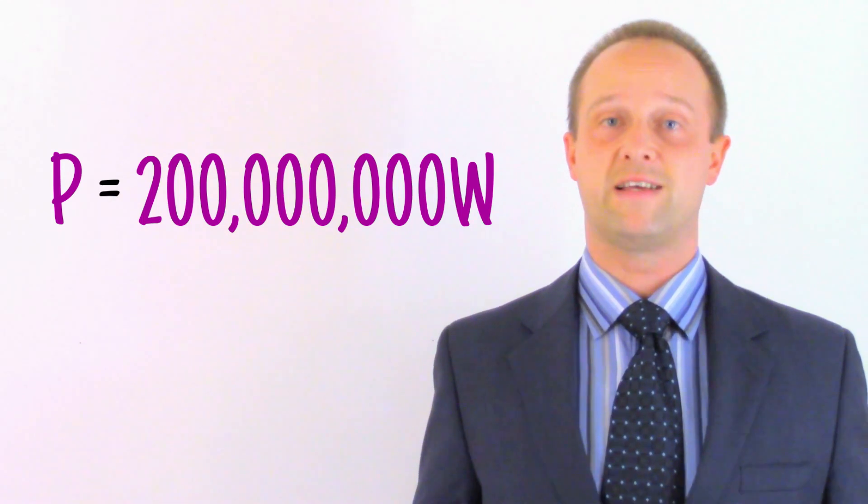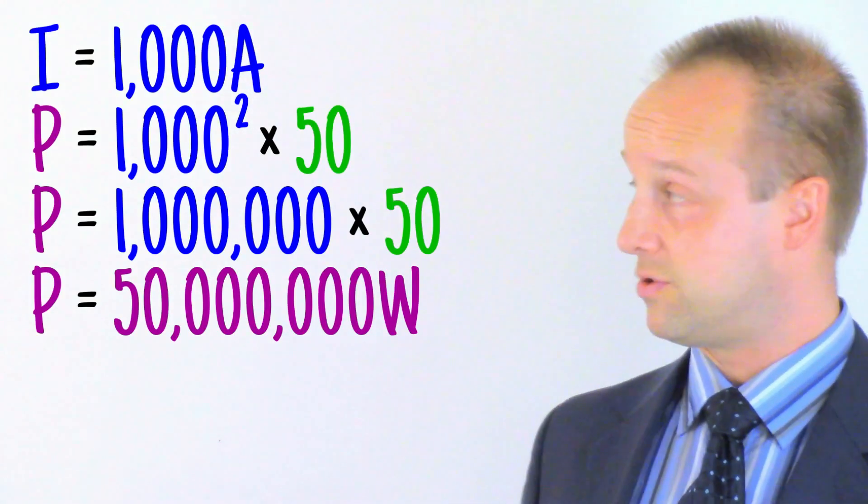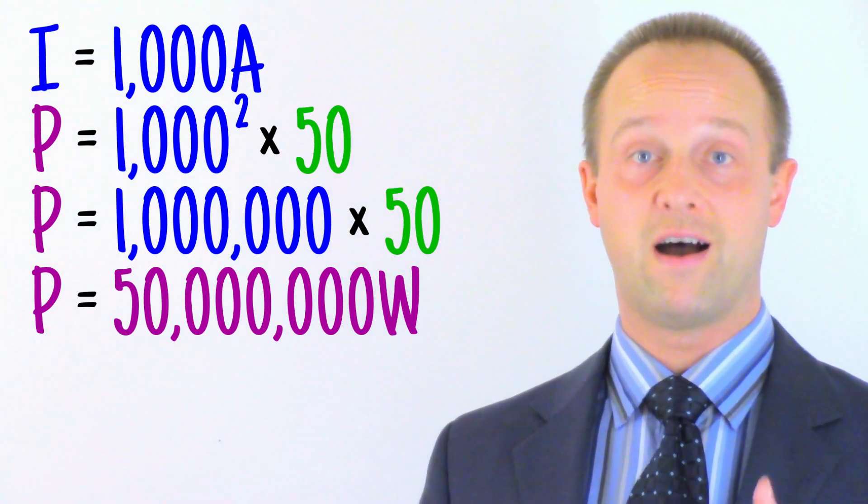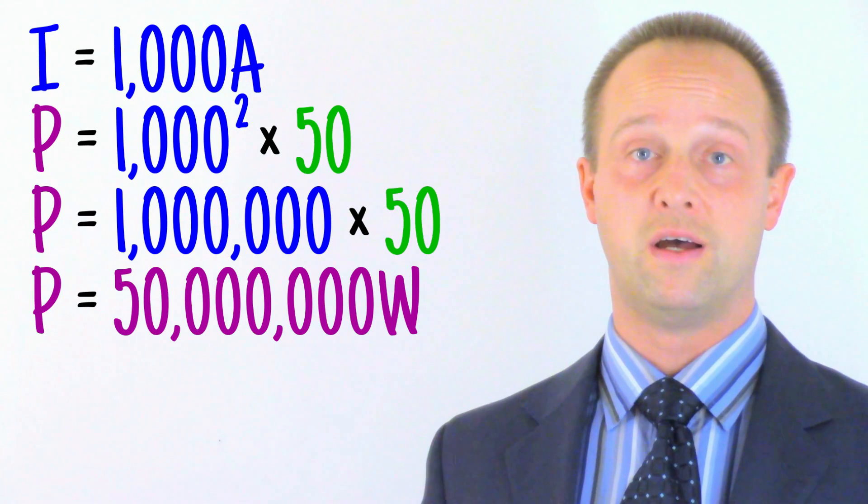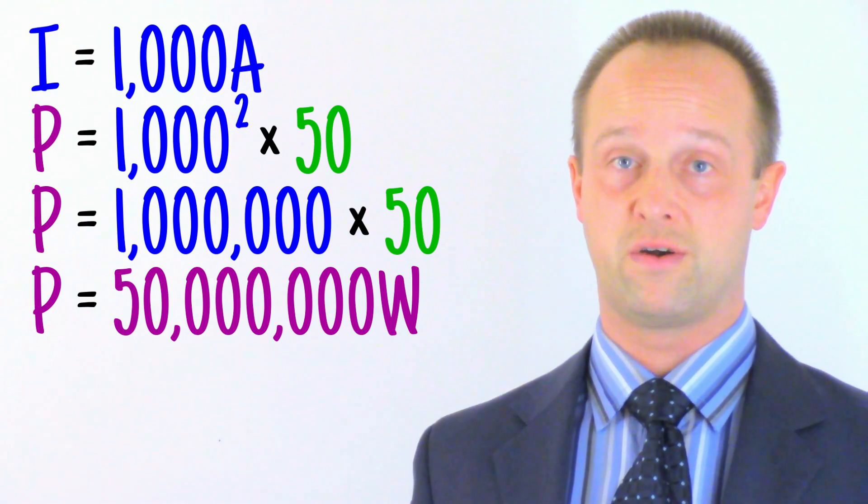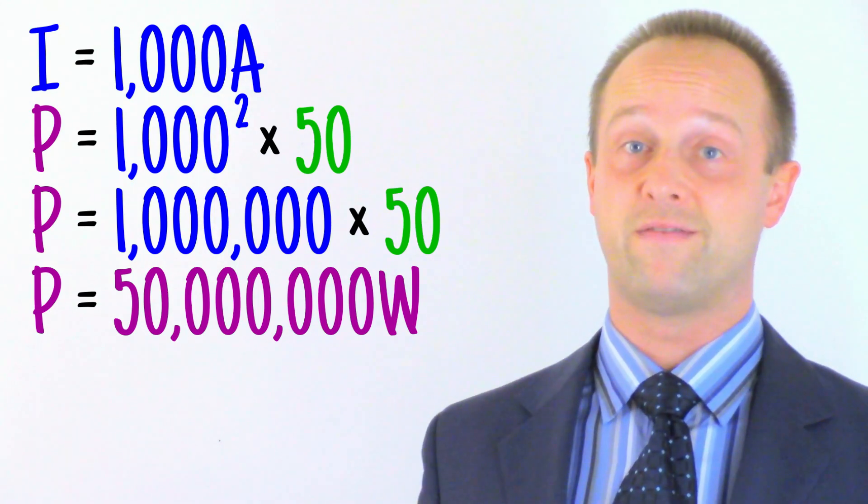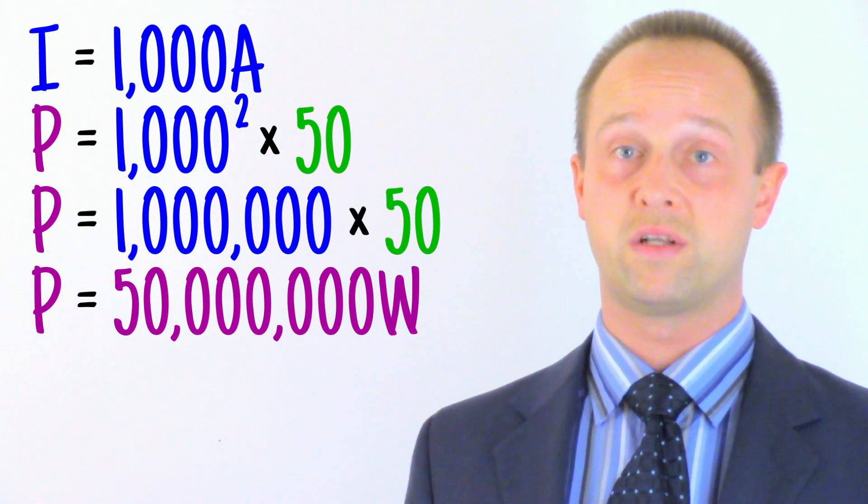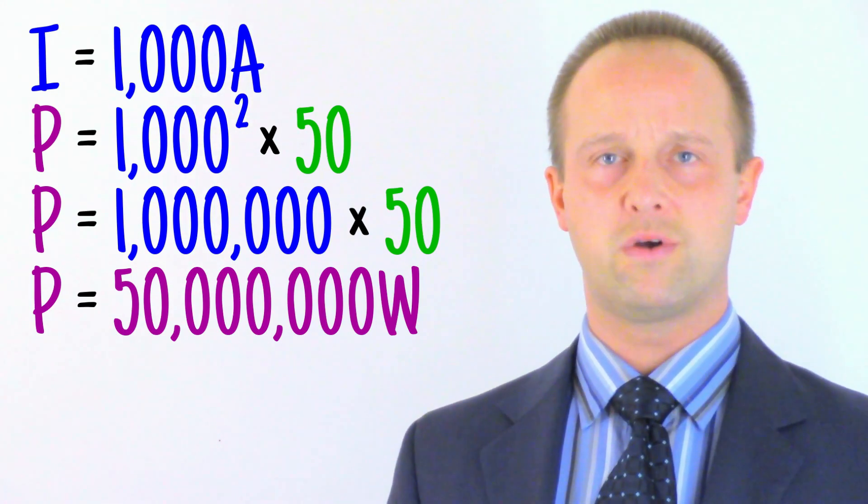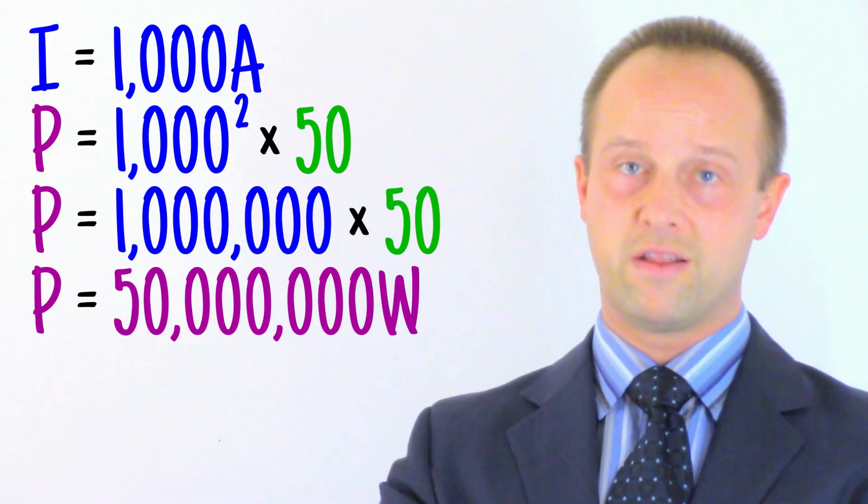As we've seen, we can't easily change the resistance. But what if we could somehow halve the current? If we try our calculation with a current of 1,000 Amps instead of 2,000 Amps, it gives us just 50 million watts or 50 megawatts being wasted. By using half the current, we reduce our waste power to a quarter of its original amount. This is because it depends upon the square of the current, so a small change can have a big effect. If we reduced the current to a third of its value, we'd get 1 ninth of the power wasted. Reduce it to a quarter, and we'd get 1 sixteenth of the waste, and so on. But how can we reduce the current while still ensuring we transmit the same amount of power to the customers at the other end of the power line?